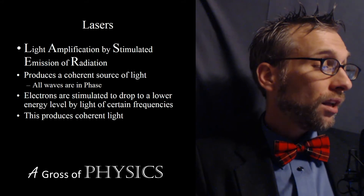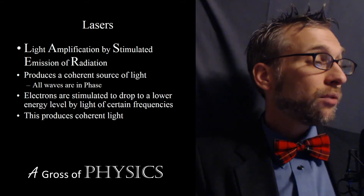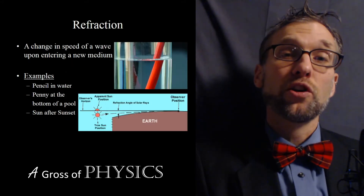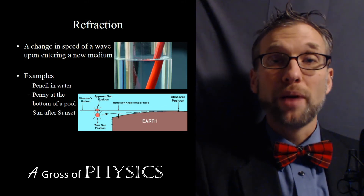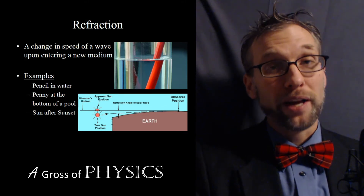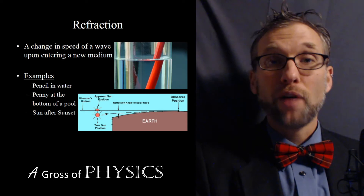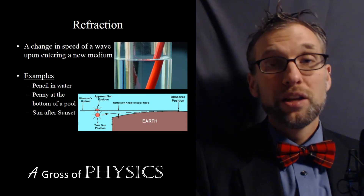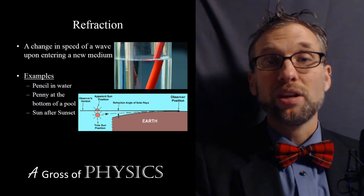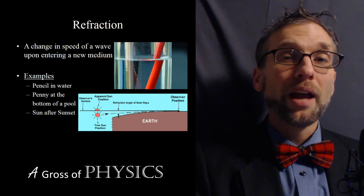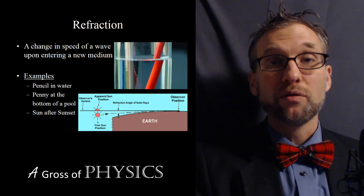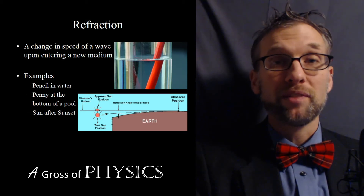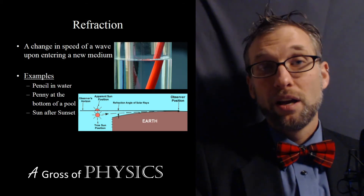Now on to refraction. Refraction is something we talked about in terms of waves hitting a new boundary. Every time waves hit a new boundary, three things happen: reflection, refraction, and absorption. Absorption means the wave loses energy so the amplitude will go down. Reflection means some of the light will bounce off. The law of reflection holds for every beam of light that hits a surface.